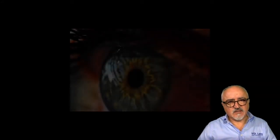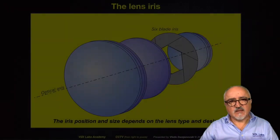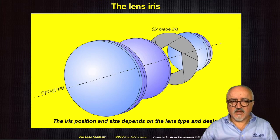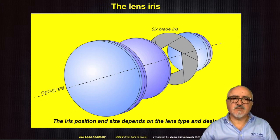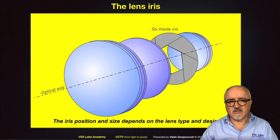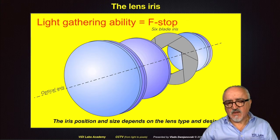Like with the human iris, which widens when we get in the dark and closes when we get out in the sun, the lens iris has the same function. We open the lens iris manually or automatically to let more light in, or close the iris if we have too much light coming to the sensor. This so-called light-gathering ability we measure with so-called f-stops. F-stop is a number that is usually engraved on all lenses, no matter whether they are CCTV or photographic or cinematographic. All of them will have somewhere written or engraved what is the f-stop of the lens. This indicates their maximum light-gathering ability — the lower the f-number is, the more light the lens transmits to the sensor.